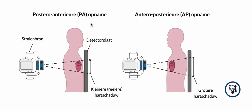This technique gives a way more realistic view of the size of the heart. The reason for that is that the heart is an anterior mediastinal structure. Since it's closer to the detector plate in a PA view, the shadow of the heart is much less magnified, and so you can reliably determine the cardiothoracic ratio using a PA view.